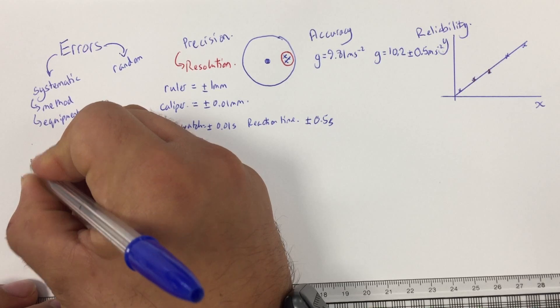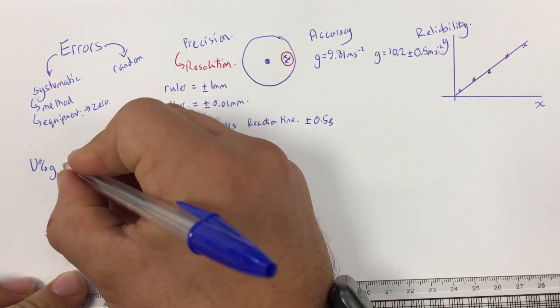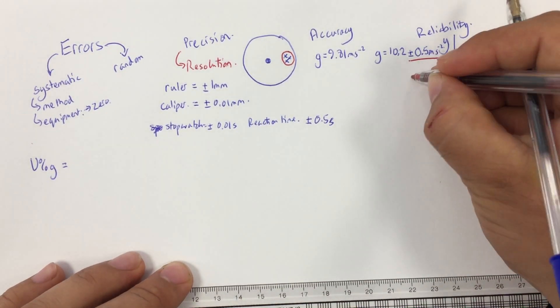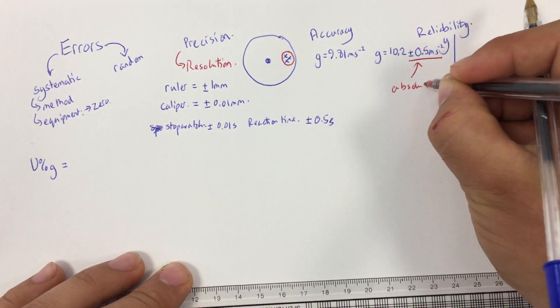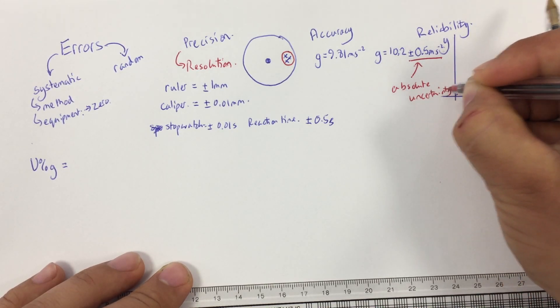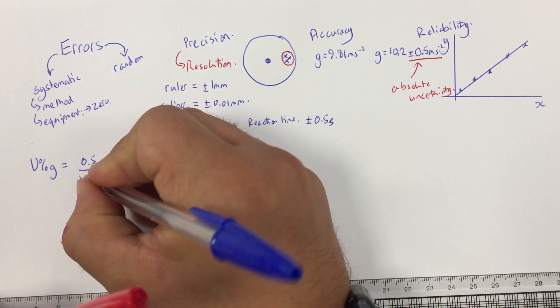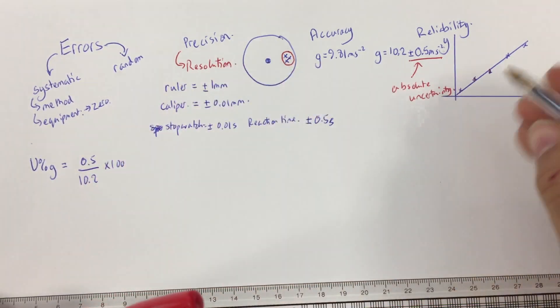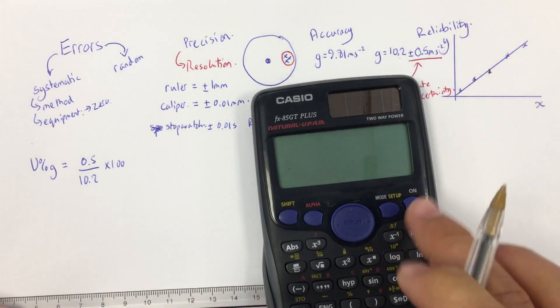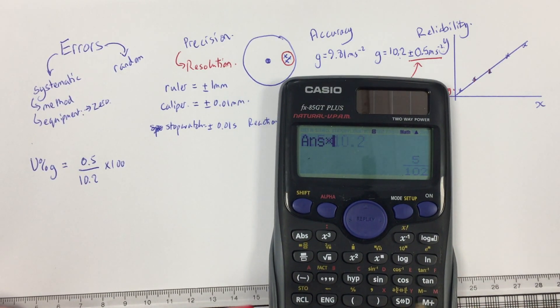So, if I wanted to work out my percentage uncertainty in g, based upon this data here, what I would do is my absolute uncertainty, which is the plus or minus bit that follows it. So, we call this the absolute uncertainty, because it's a specific number. And so, I would do 0.5 divided by 10.2 times 100. In other words, I'm trying to find out what percentage of this number is 0.5. So, if we then do that in our calculator, 0.5 divided by 10.2 times 100, we get that is equal to 4.9%.